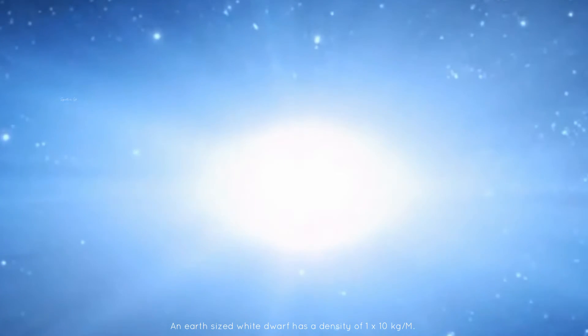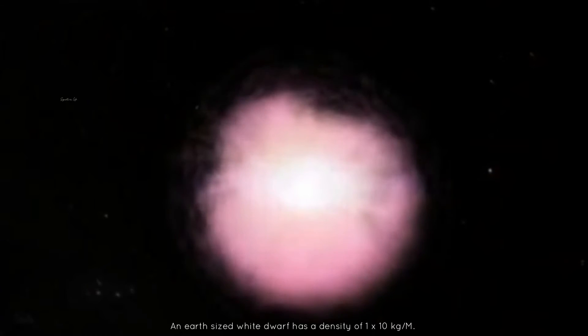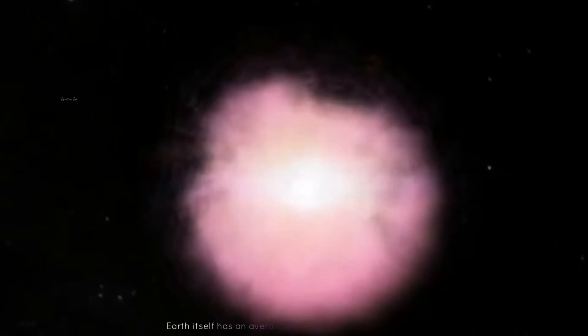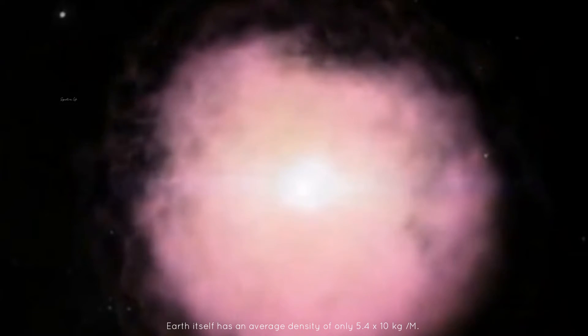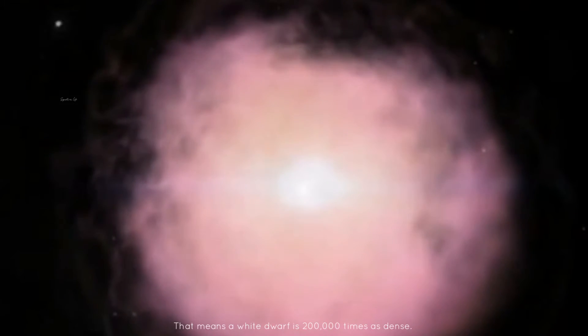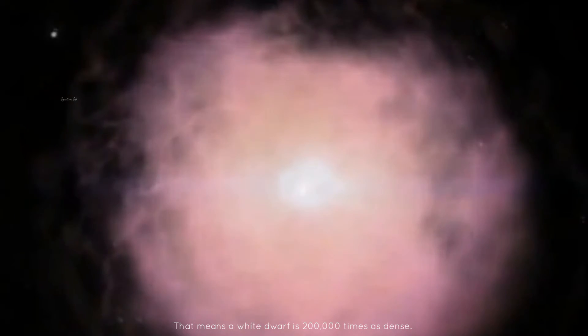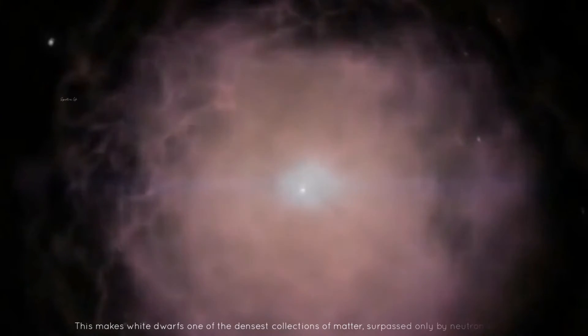A typical white dwarf is half as massive as the sun yet only slightly bigger than Earth. An Earth-sized white dwarf has a density of 1 × 10^9 kilograms per cubic meter. Earth itself has an average density of only 5.4 × 10^3 kilograms per cubic meter. That means a white dwarf is 200,000 times as dense.